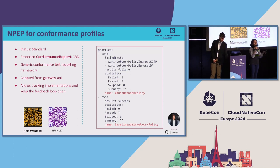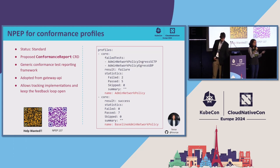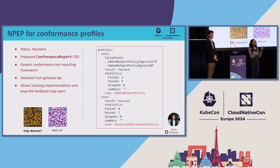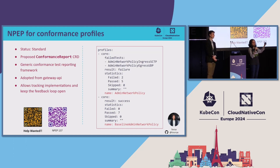Conformance profiles is an effort in collaboration with the gateway API community. As we develop new APIs out of tree, it's important to think about conformance tests and how implementations give us feedback. We want to define clear profiles and test suites that implementers can run from our library and report back. For end users, the benefit is knowing which CNI supports which features, so you can choose the right one when multiple implementations support ANP or BANP.